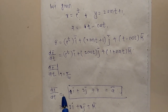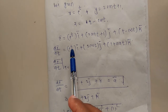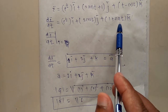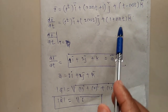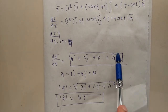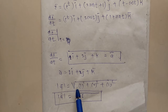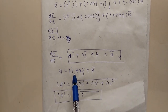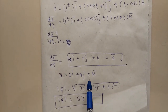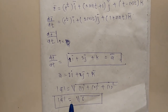We evaluate dr/dt at t = 0: eᵗ at t=0 gives e⁰ = 1 (i); 2cos(0) = 2·1 = 2 (j); sin(0) = 0, so 1 + 0 = 1 (k). Therefore ā = i + 2j + k. To find |ā|, we take the square root of (1² + 2² + 1²) = √(1 + 4 + 1) = √6.